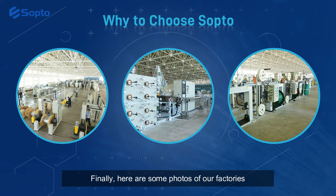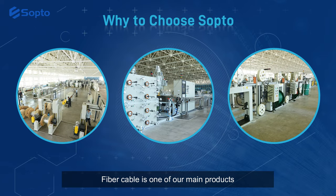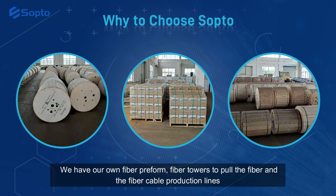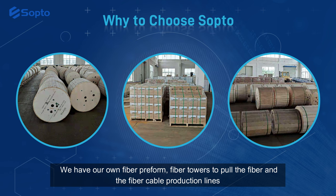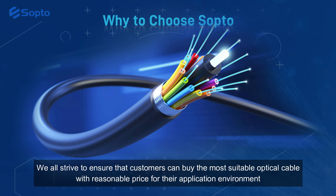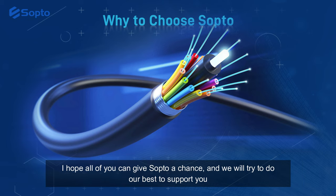Here are some photos of our factories. Fiber cable is one of our main products. We have our own fiber preform fiber towers to pull the fiber and the fiber cable production lines, and we can produce 80 meters of fiber cable per minute. We strive to ensure that customers can buy the most suitable optical cable at a reasonable price for their application environment. I hope all of you can give Sopto a chance, and we will try our best to support you.